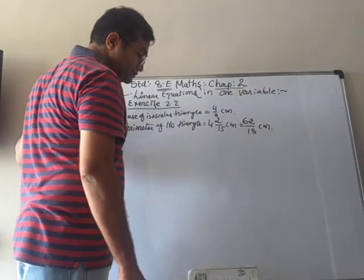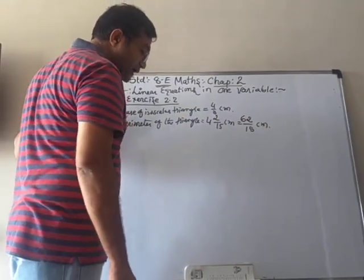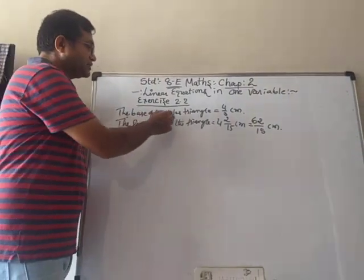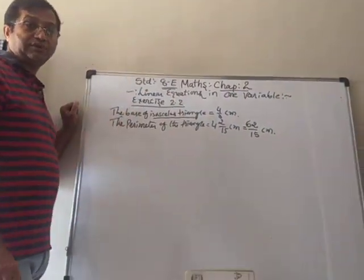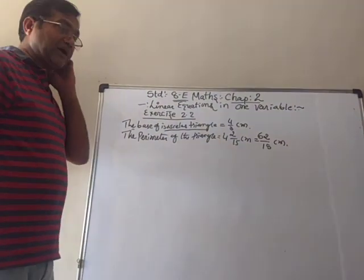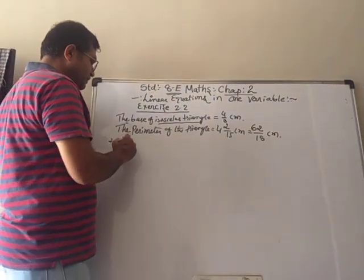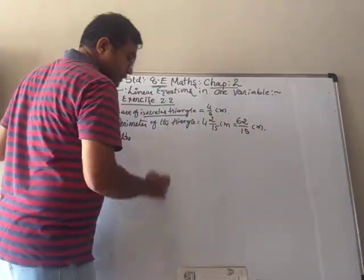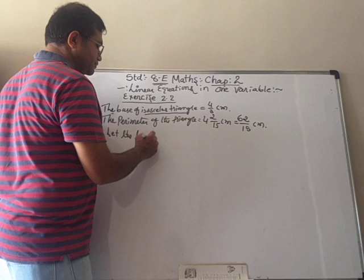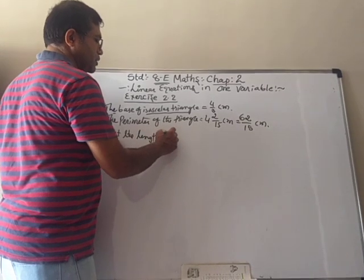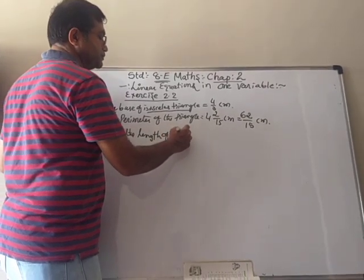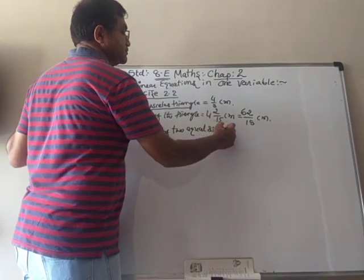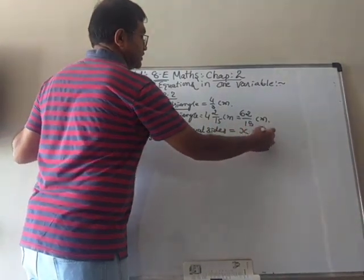We have to find the length of either of the remaining equal sides. Because it is an isosceles triangle, two sides are equal and that is what we have to find. So let the length of the two equal sides each be x.